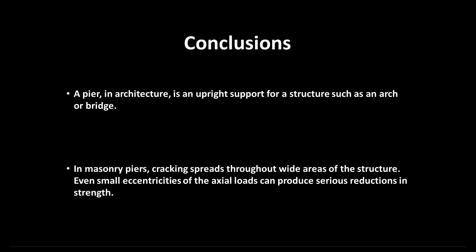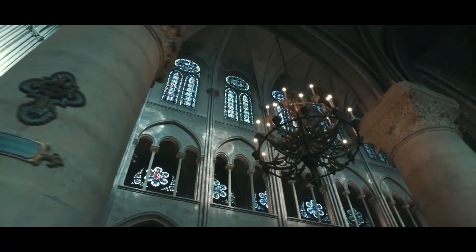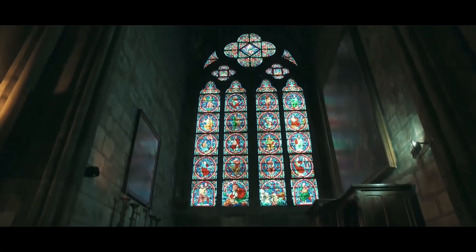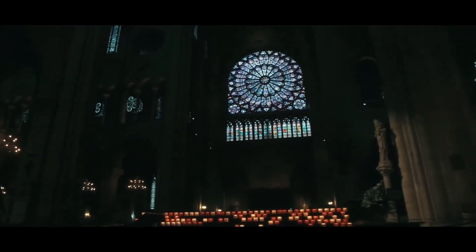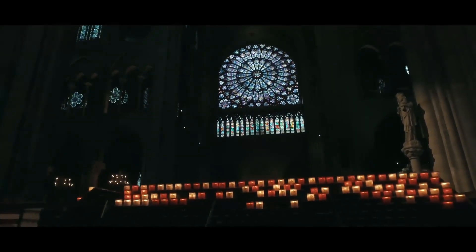From conclusions, what we learned: a pier in architecture is an upright support for a structure such as an arch or bridge. In masonry piers, cracking spreads throughout wide areas of the structure. Even small eccentricities of the axial loads can produce serious reductions in strength. Thank you to everyone for watching this video. I do hope you found this video informative and you learned some things from it. If you do have any questions, then you can write a comment or message. I am happy to answer any questions. Thanks for your watching!